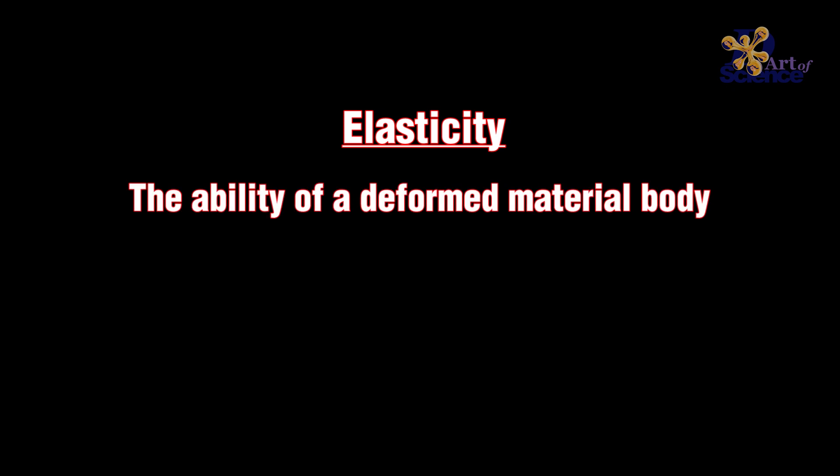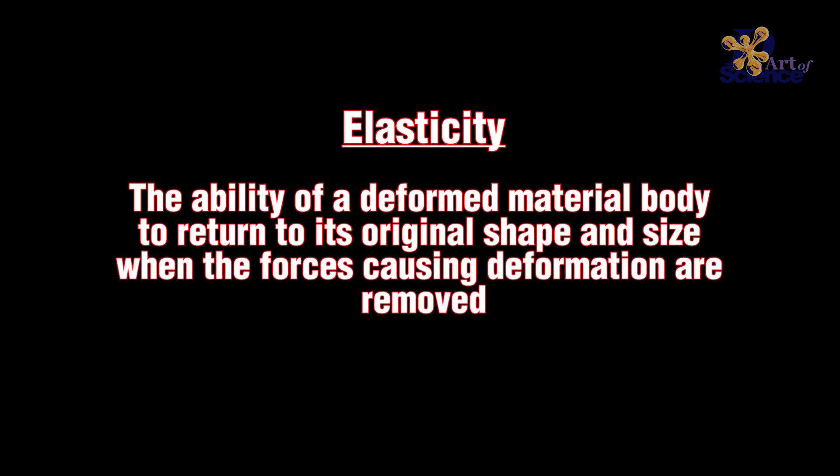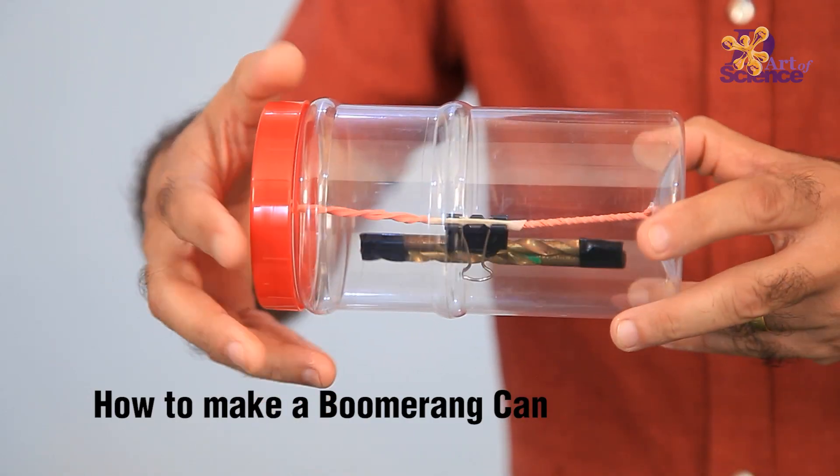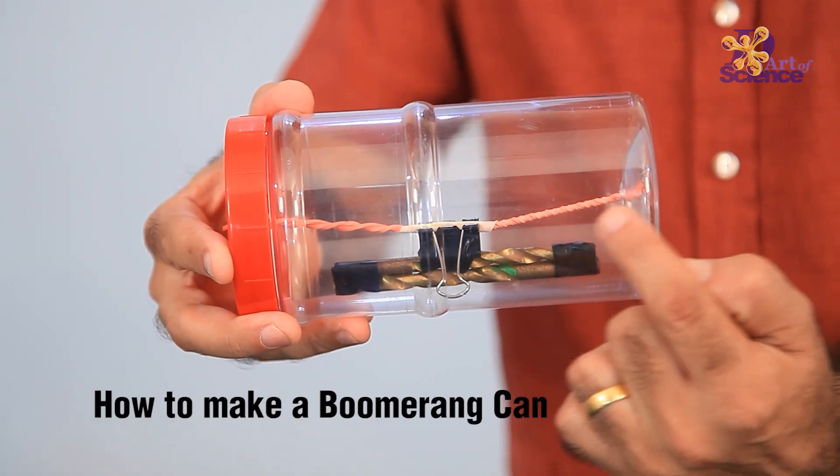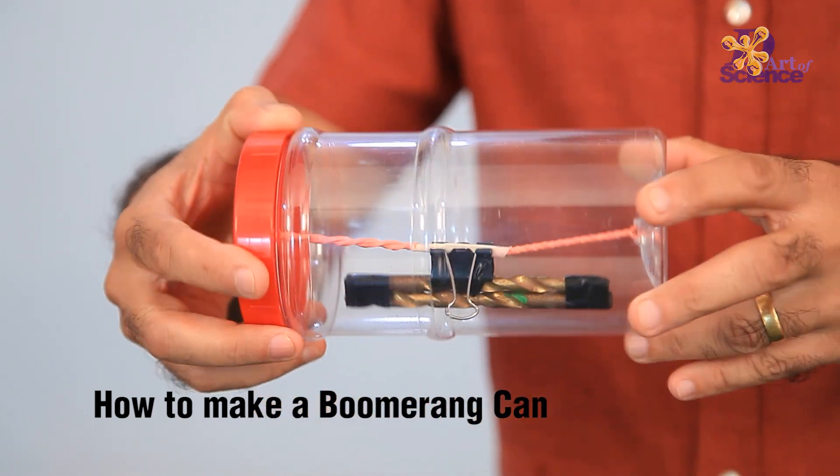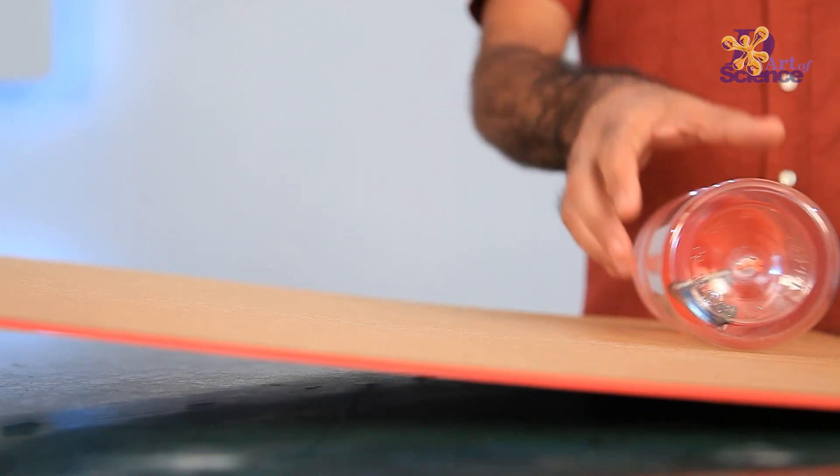Elasticity is the ability of a deformed material body to return to its original shape and size when the forces causing the deformation are removed. It means that when we apply a force, we can alter the shape or size of a material, like rubber bands. But when we remove the force, the material has the ability to return back to its original form.